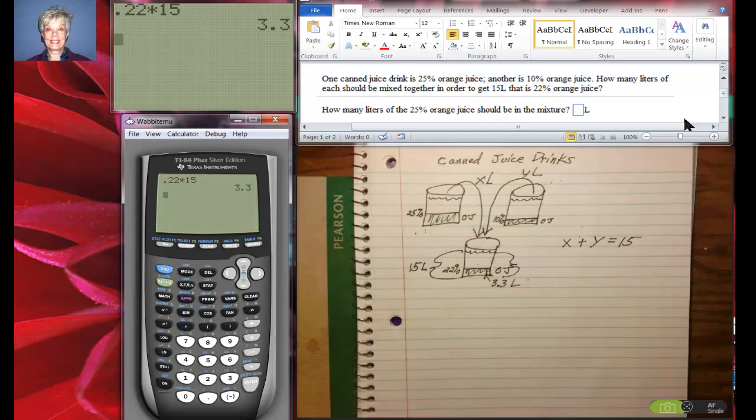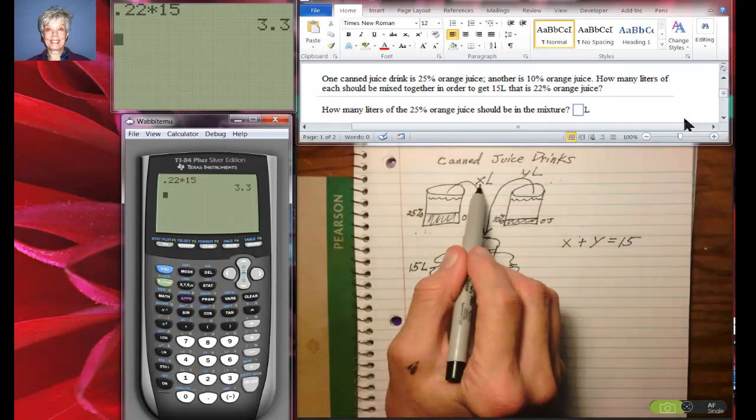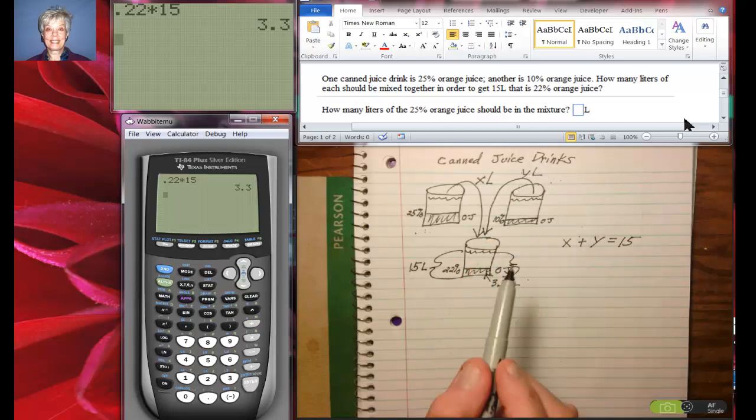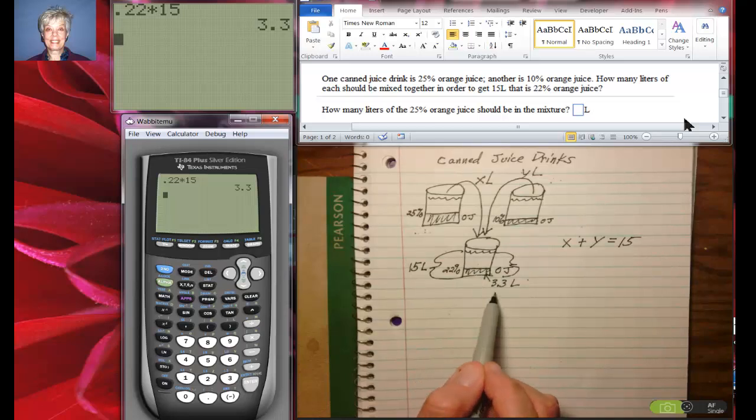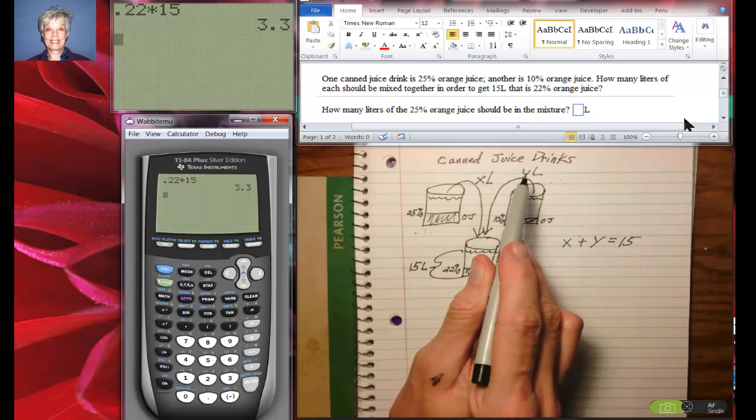Now, these problems are all done in a particular way. There's one more relationship there that isn't really obvious and that is that the amount of orange juice in this x liters plus the amount of orange juice in this y liters is going to be the source of the amount of orange juice at the end. In other words, this 3.3 liters is going to be made up of 25% of this x liters and 10% of this y liters.